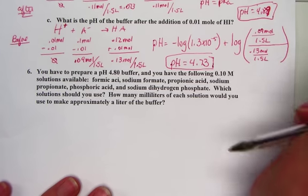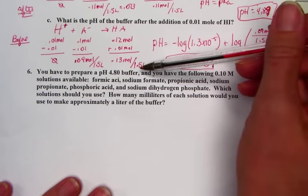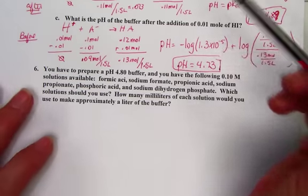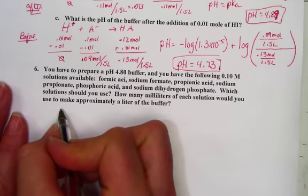Suppose we have to prepare a pH 4.8 buffered system, and we have the following choices: 0.1 molar solutions of the following.